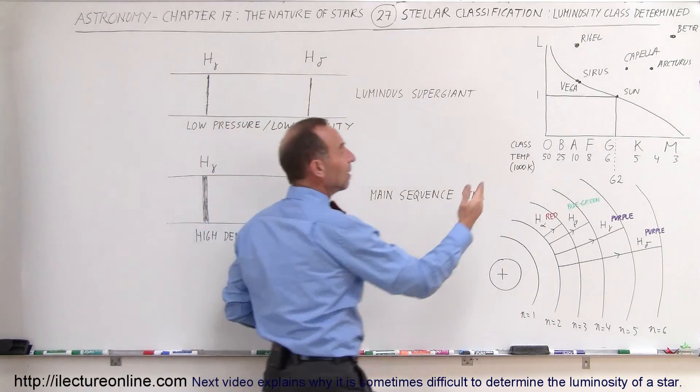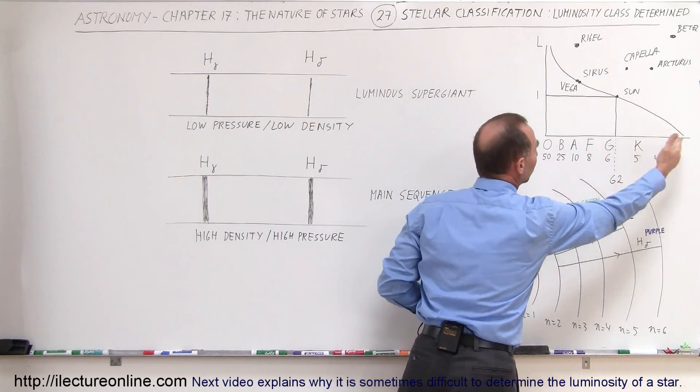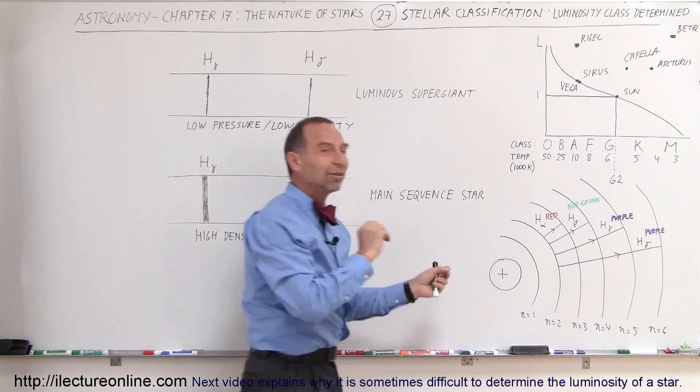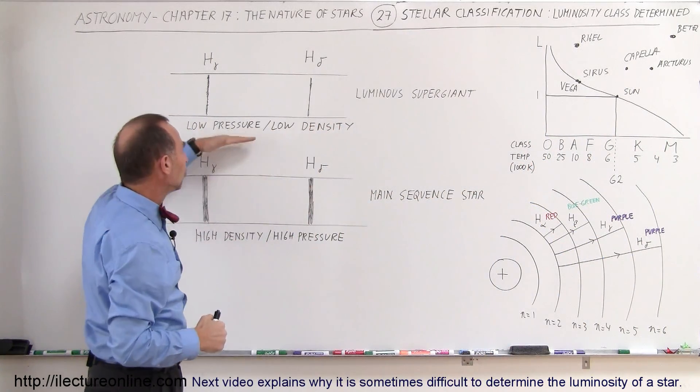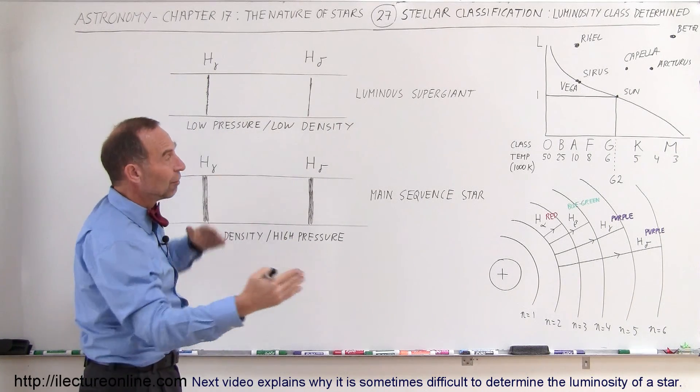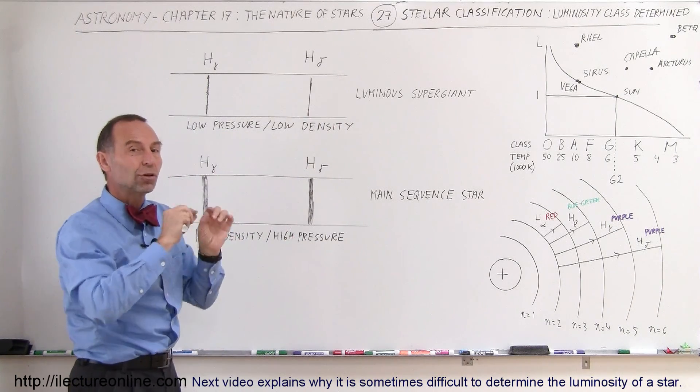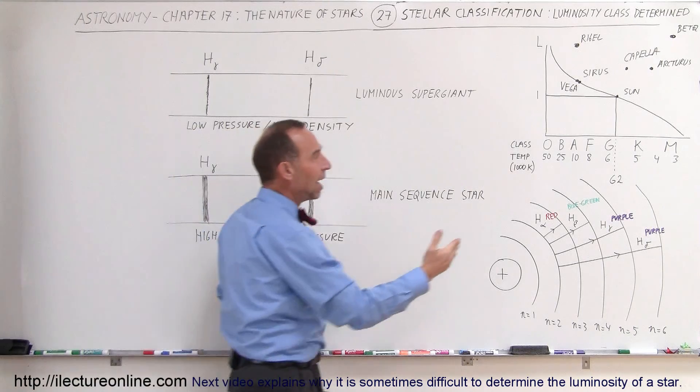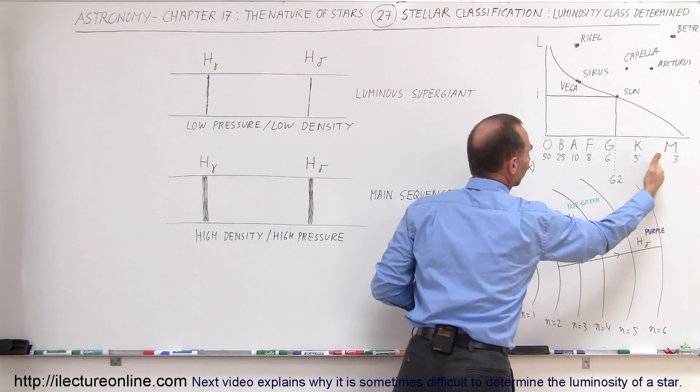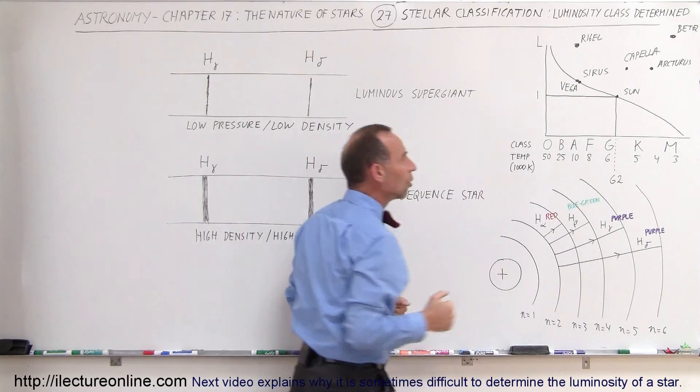Of course, we also know that they vary according to the spectral class, but we have to differentiate between the variation due to changing the pressure and density of the gas at the surface, versus changing the temperature of the surface, as the stars get hotter and hotter, as we go from M-class stars all the way up to O-class stars.